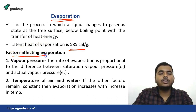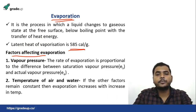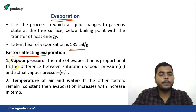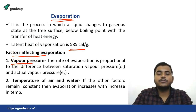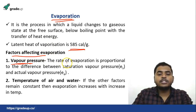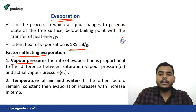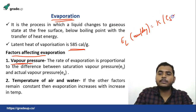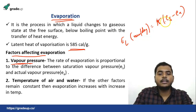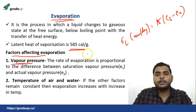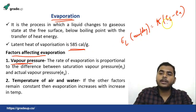There are numerous factors that affect the rate of evaporation. First is vapor pressure — the rate of evaporation is proportional to the difference between saturation vapor pressure and actual vapor pressure. So the rate of evaporation EL (in mm/day) = k × (es − ea), where k is a coefficient, es is saturation vapor pressure, and ea is actual vapor pressure. This is also known as Dalton's law. The rate of evaporation increases as this difference goes on increasing.